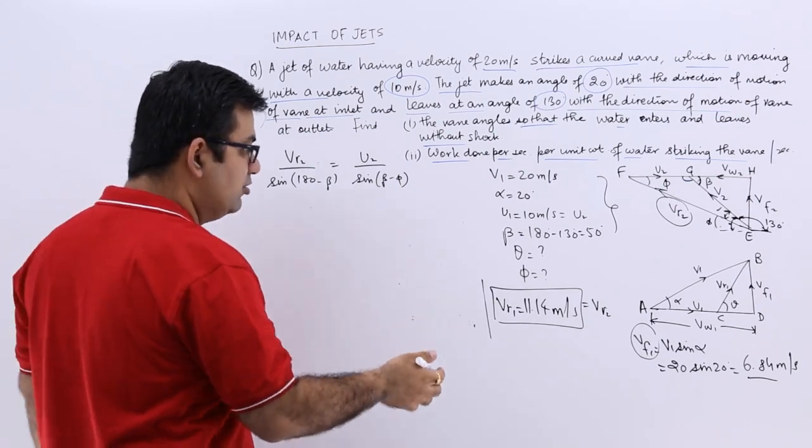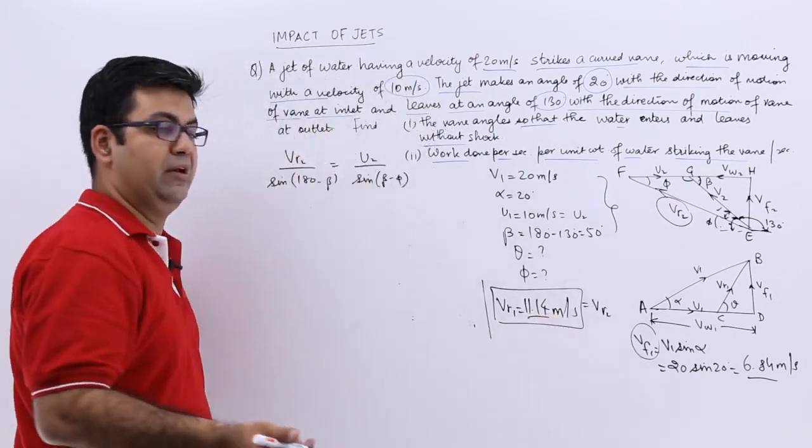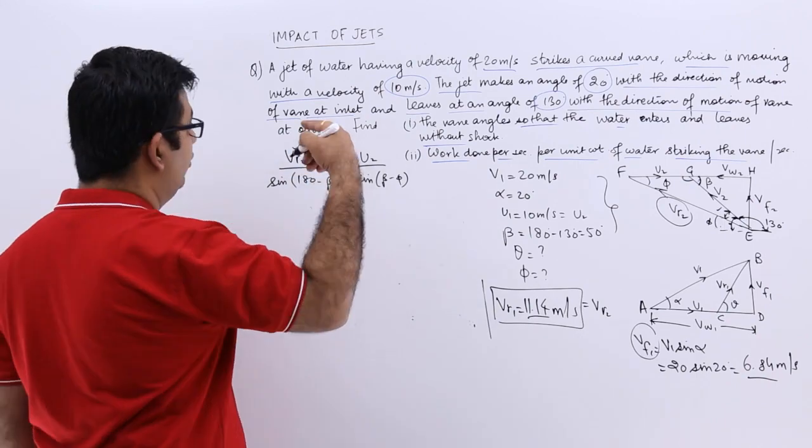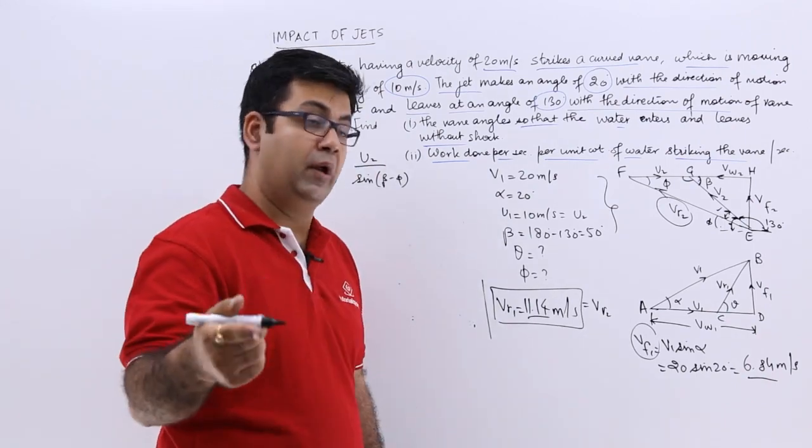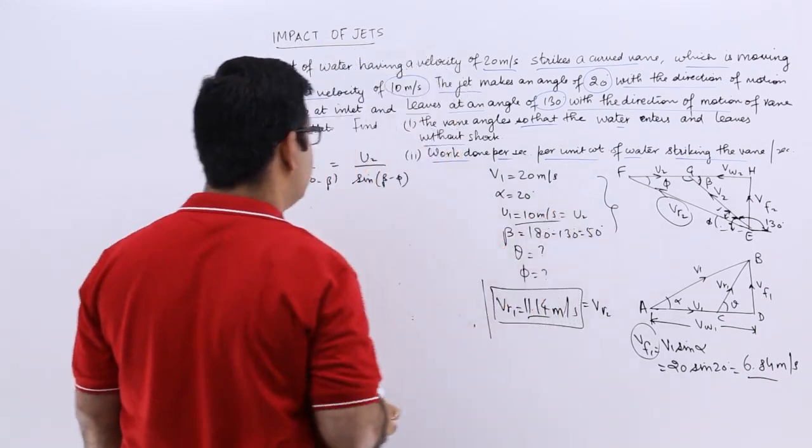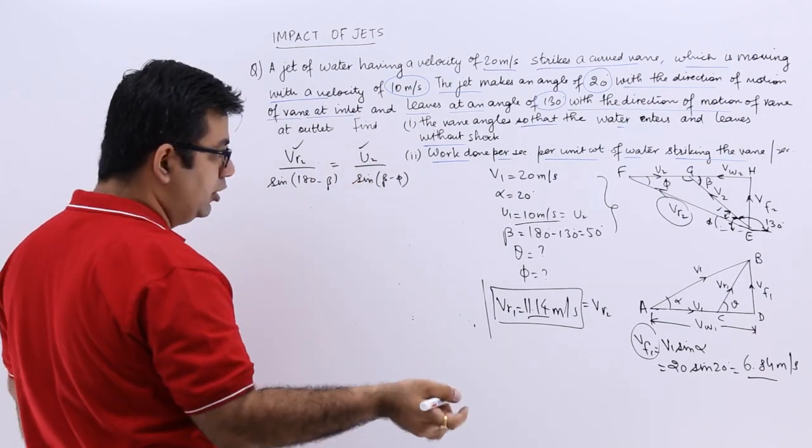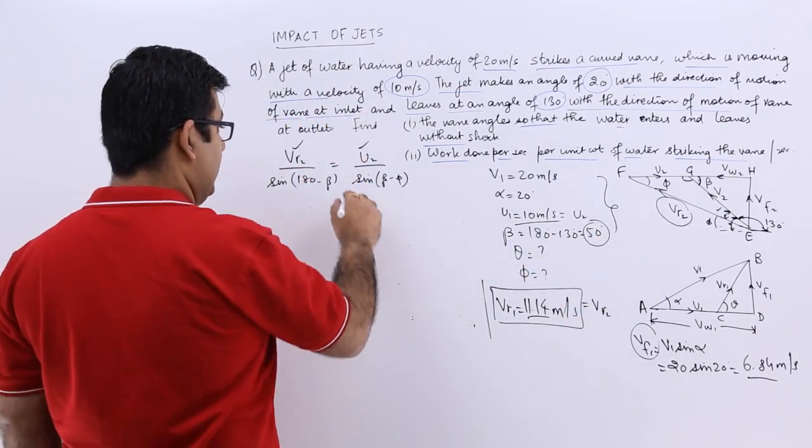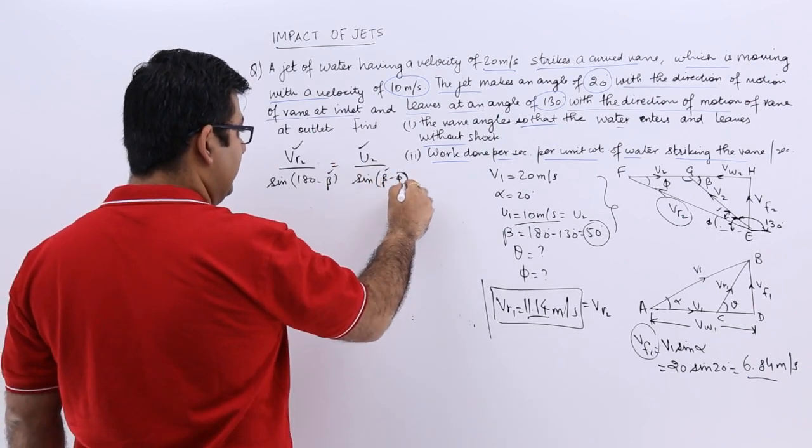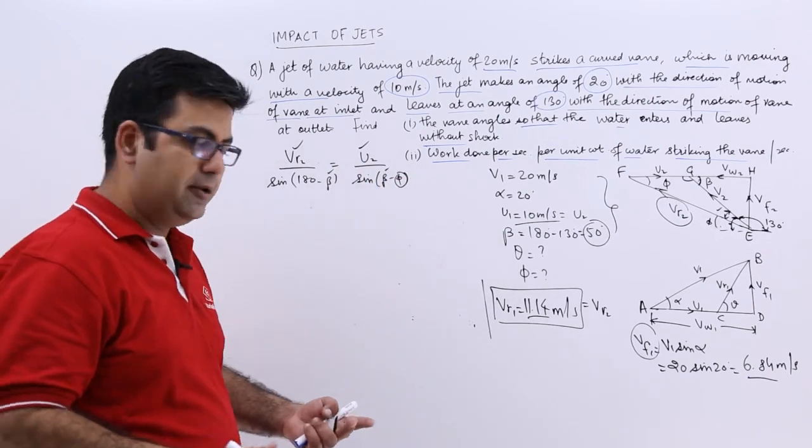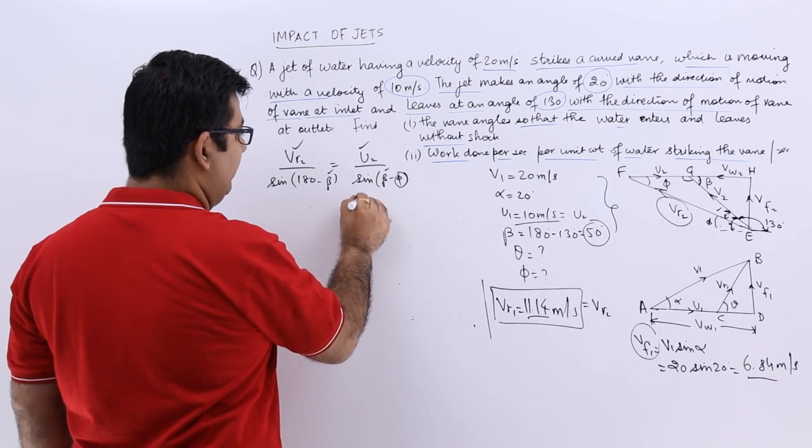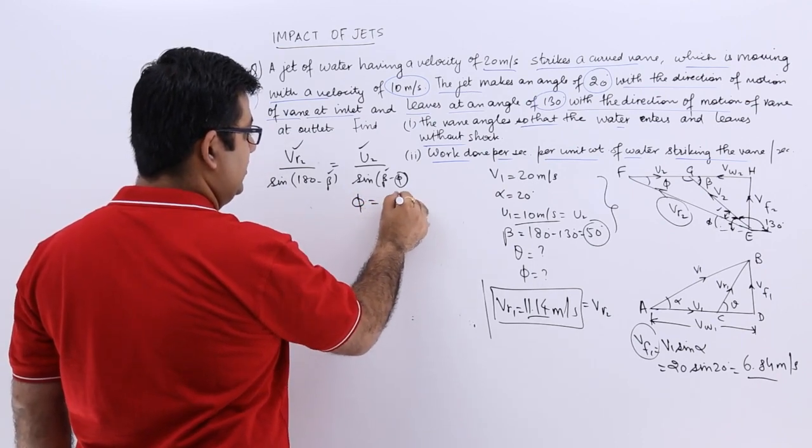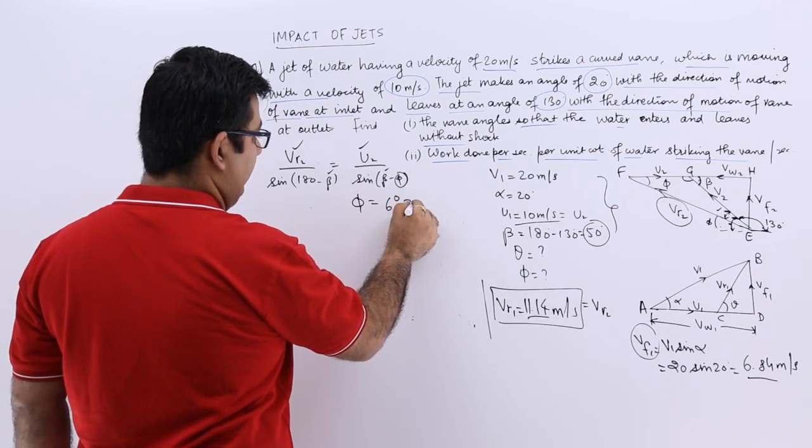Now I know the value of VR2 which is 11.14. I know the value of U2 which is equal to U1 and it is 10 meters per second. Beta is also known to us as 50 and it is an acute angle. So from here I can find out the value for phi very easily. So phi eventually will come out to be around 6 degrees and 34 minutes.